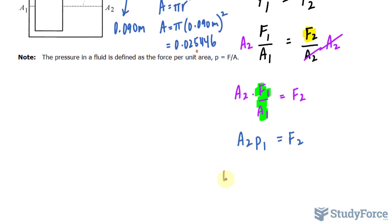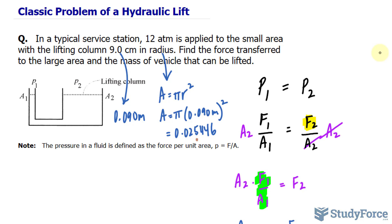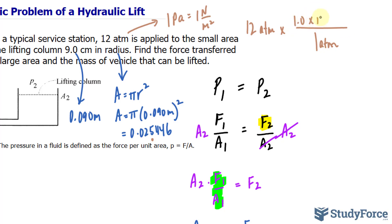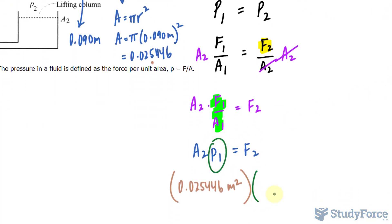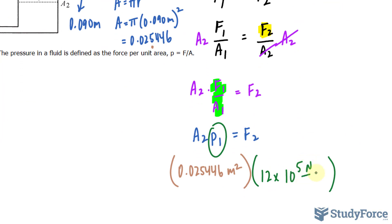I'll substitute that in for A2, which is in meters squared. The pressure was given in atmospheres — 12 atmospheres — and that needs to be converted into pascals, where 1 pascal equals 1 newton per meter squared. The conversion ratio is that 1 atmosphere equals 1.0 times 10 to the power of 5 newtons per meter squared. So 12 atmospheres times that conversion gives 12 times 10 to the power of 5 newtons per meter squared, which I'll place in for P1.